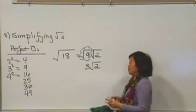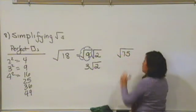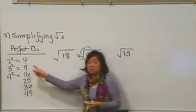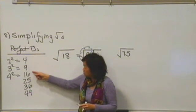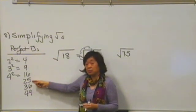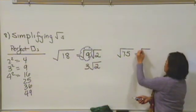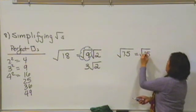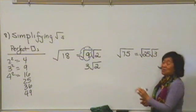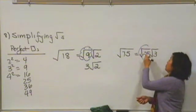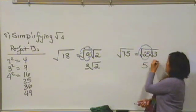Let me do one more example. What if we wanted to simplify the square root of 75? We want to find one of these numbers, if any, that goes into 75. And so, just checking our list, 25 is going to work. So, we can take the square root of 75 and say that that's the same as the square root of 25 times the square root of 3. And why do we break it up using a perfect square? Because we know that the square root of 25 is simply 5. So, we have 5 square root of 3.